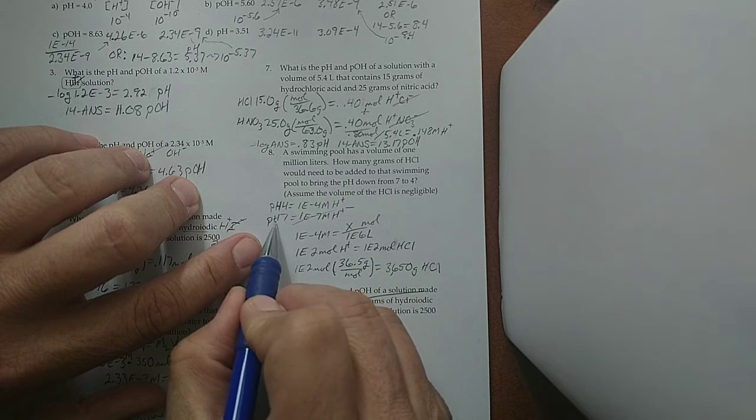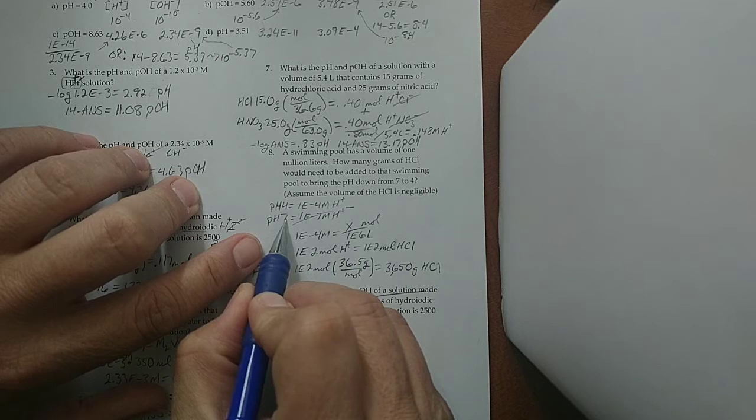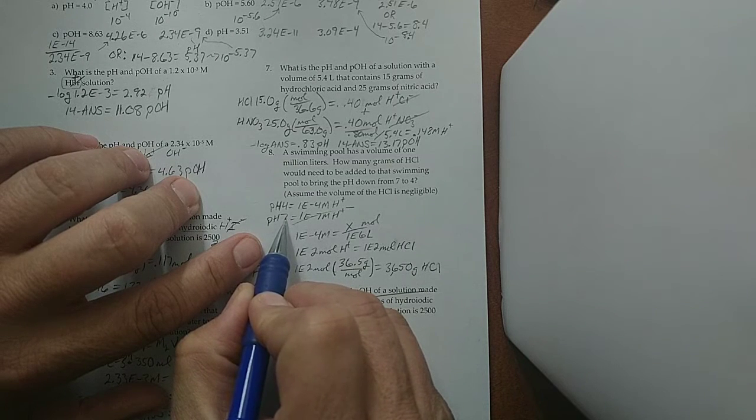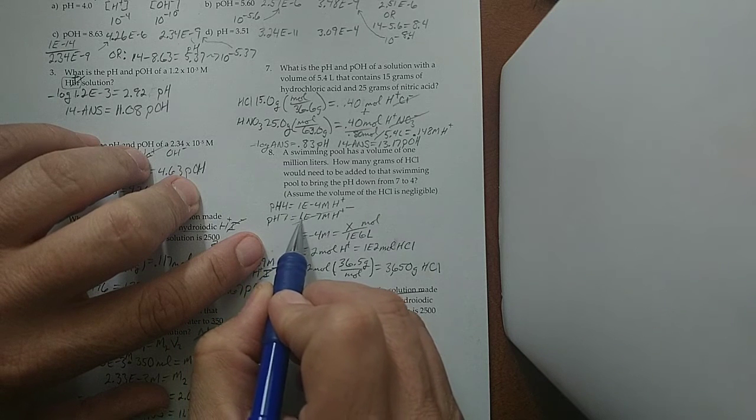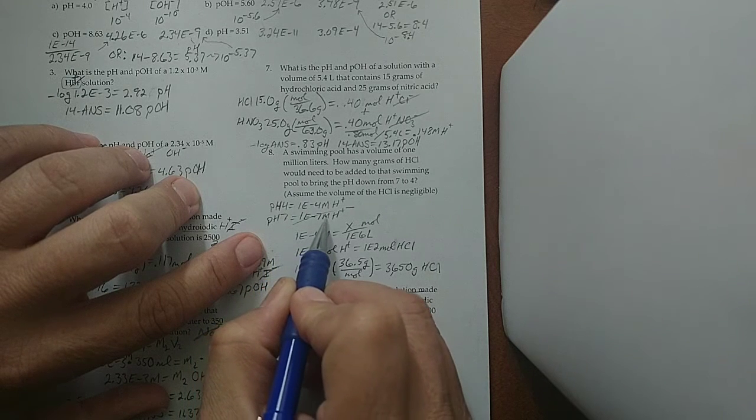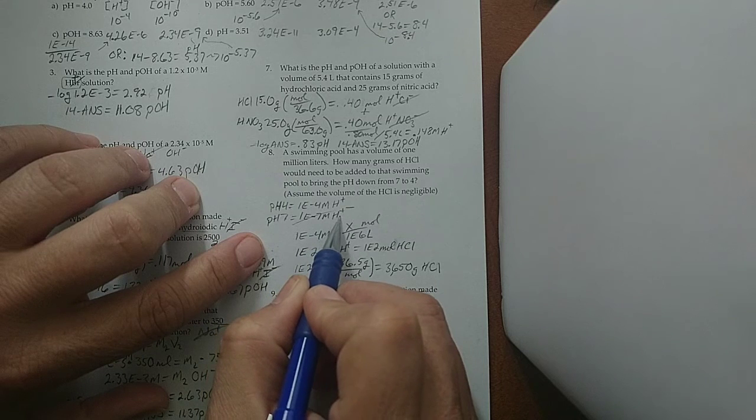Well, if I knew that the pH was 7, remember, this is the exponent on 10, except the sign is wrong. So, what was the molarity? It was 1 × 10⁻⁷ molarity of H⁺.